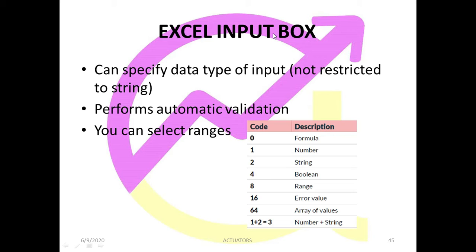Selecting ranges can only be done in the Excel input box, not in the VBA input box. There are different type codes: 0 is for formula, 1 is for number, and you can specify the data type of the input. For boolean, it will only accept true or false. For range, it will only take a selected range. You can also combine types — for example, writing 3 means number plus string (1 + 2), so both number and string are accepted.